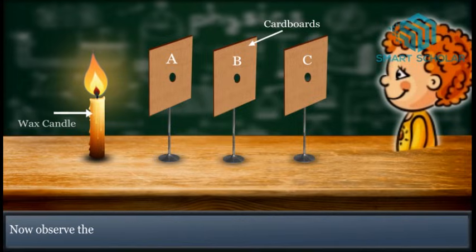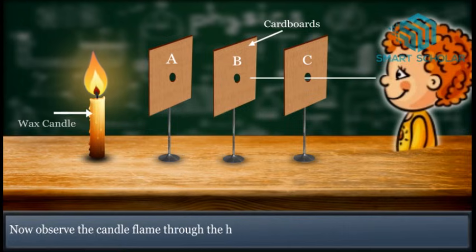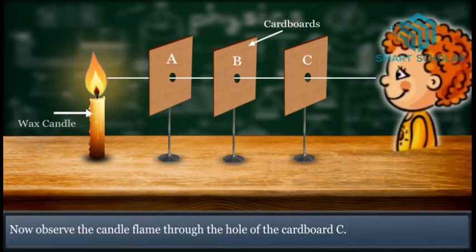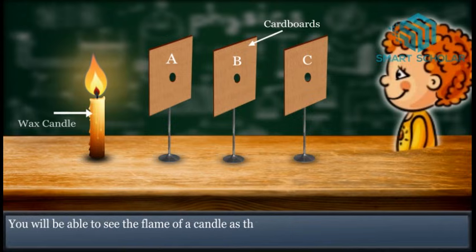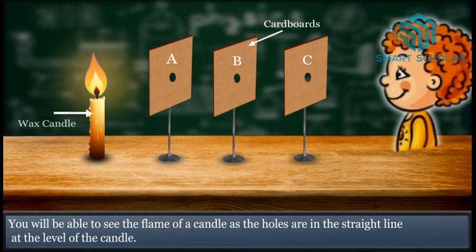Now observe the candle flame through the pin hole of Cardboard C. You will be able to see the flame of the candle as the holes are in a straight line at the level of the candle.